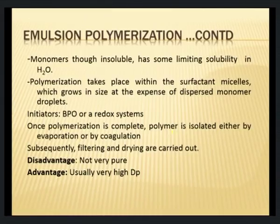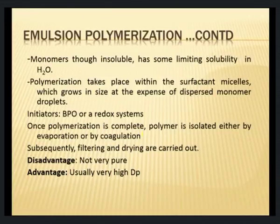Once polymerization is completed, the polymer is isolated either by evaporation or by coagulation — an important step because otherwise the content would include not only polymer but also unreacted monomers, emulsifying agents, initiators, and other substances that must be removed. Subsequently the polymer is filtered, dried, and taken for applications. The advantage of emulsion polymerization is a very high degree of polymerization possible in a solution medium.